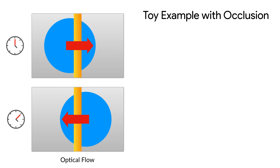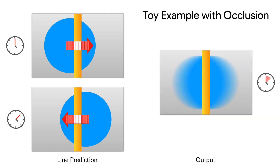To fix this, we train a neural network to predict motion vectors and weights along the line of each vector. This means that our network can correctly model the motion of the blue object while avoiding the yellow occluder when blurring. This allows our model to learn to produce renderings that correctly obey occlusion relationships between objects, thus rendering the true motion blur in our toy example.